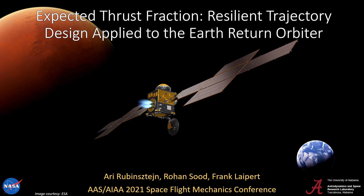Hello, my name is R. Rubenstein, and today we'll be discussing how expected thrust fraction can be used to design trajectories that are resilient to missed thrust events. We'll be exploring this in conjunction with the Earth Return Orbiter's outbound Earth-to-Mars trajectory. This is part of an ongoing collaboration between the University of Alabama's Astrodynamics and Space Research Lab and NASA's Jet Propulsion Laboratory.